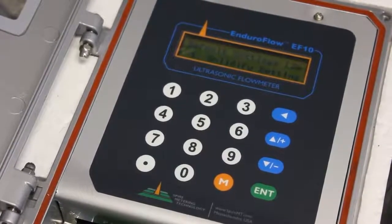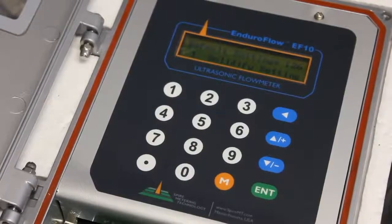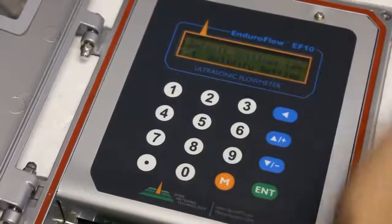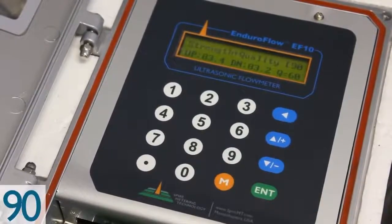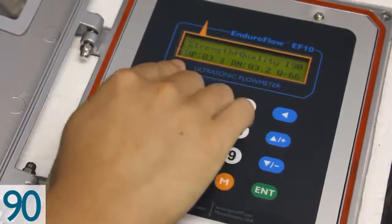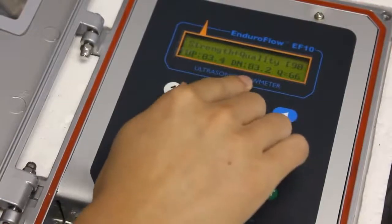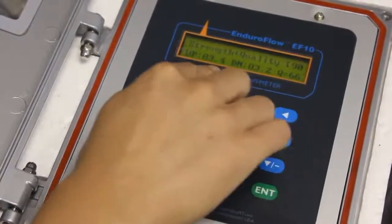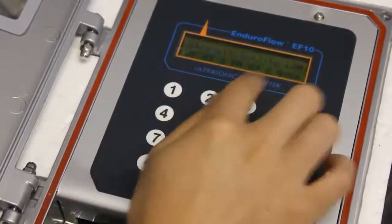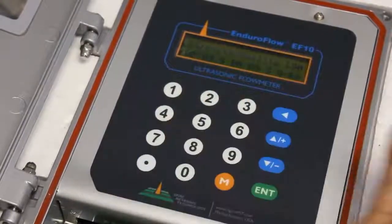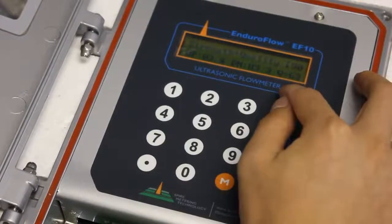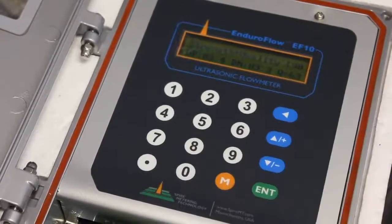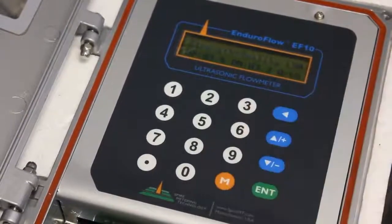To check the strength and quality, we go to menu 90. Now this is the strength for the upstream. This is the strength for the downstream. Both of these values should be between 60 and 99. So as we see they're fine at 80 and 83.